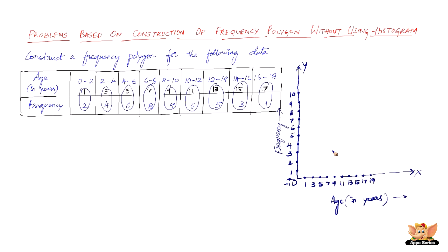Now let's start plotting the points. 1 on the x-axis and 2 on the y-axis — so (1, 2) is here. (3, 4) is here. And (5, 6) is here. Please use graph sheets and be as accurate as you can — this is just an approximate representation of the way you do it. So here we have (7, 8). Then we have (9, 9) — it just takes a bend, going straight and then bending.